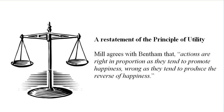Mill begins Chapter 2 of his book Utilitarianism with a restatement and endorsement of the principle of utility. He agrees with Bentham that actions are right in proportion as they tend to promote happiness, wrong as they tend to produce the reverse of happiness.